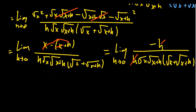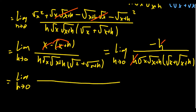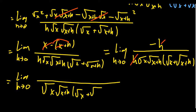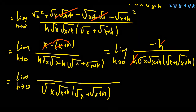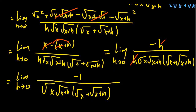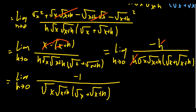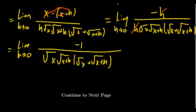Our limit then becomes the limit as h approaches 0 of negative 1 over the square root of x times the square root of x plus h times the square root of x plus the square root of x plus h. You'll notice that although there are h's in the denominator, plugging in h equals 0 won't cause division by zero, so we're ready to evaluate the limit.